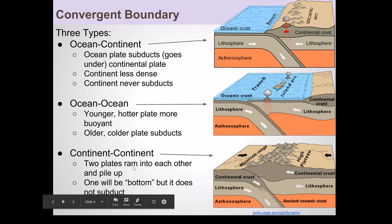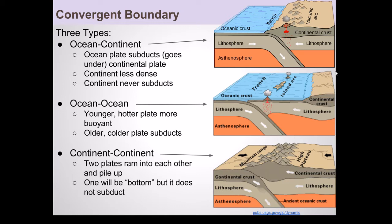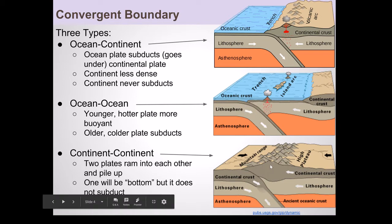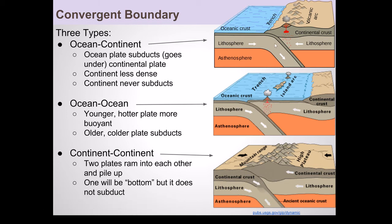There are three types of convergent boundaries, and it all has to do with the types of plates that are interacting with each other. When you have an oceanic crust ramming into a continental crust, you get ocean-continent. When you have ocean crust running into ocean crust, you get ocean-ocean. And finally, when continental crust runs into continental crust, you get continent-continent. All types of convergence, where the plates are moving towards each other.